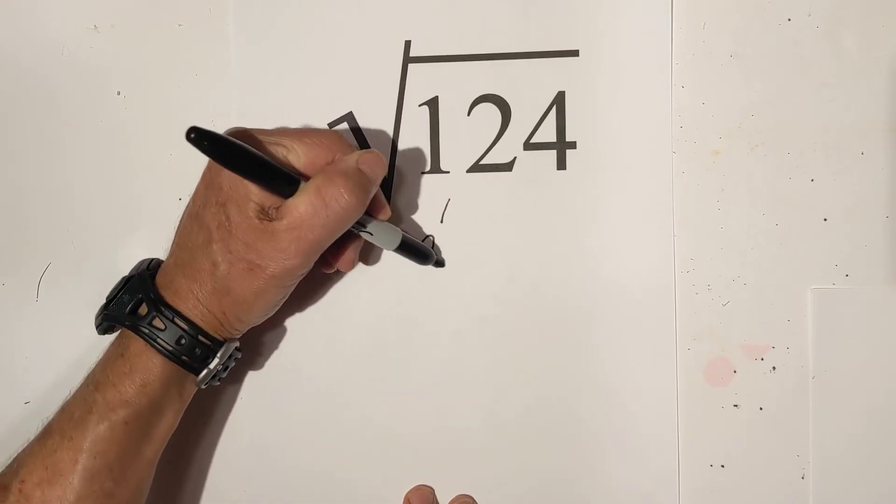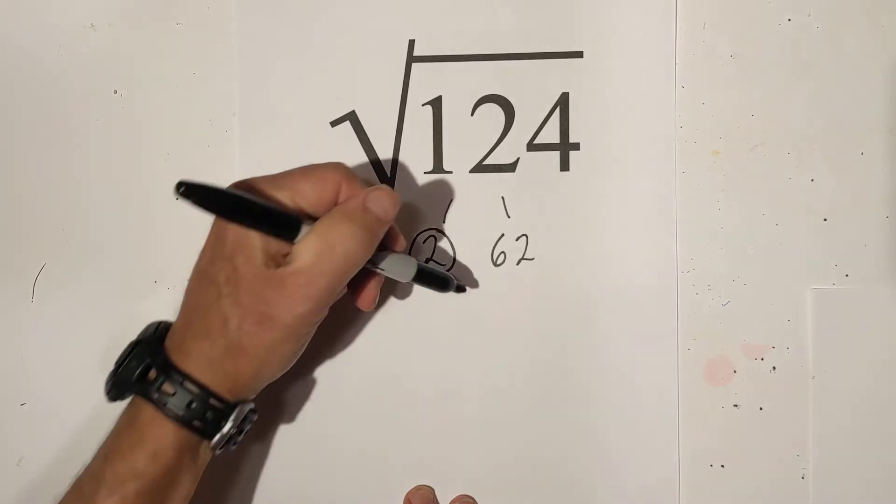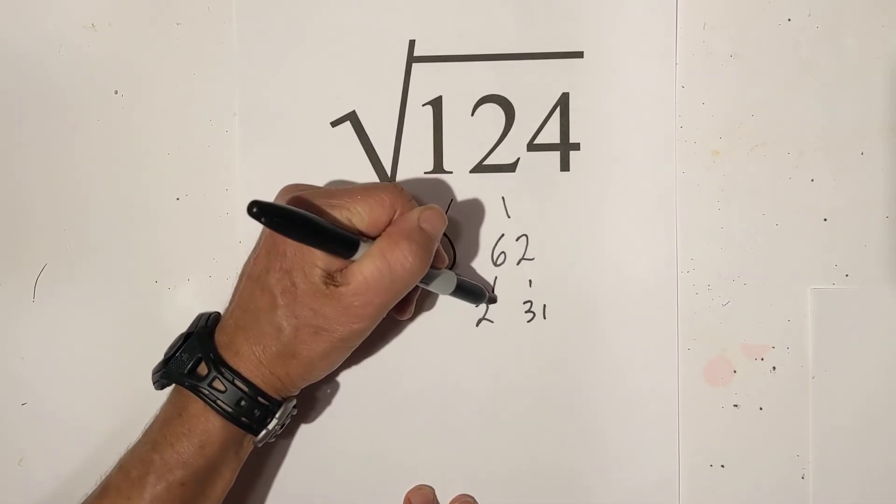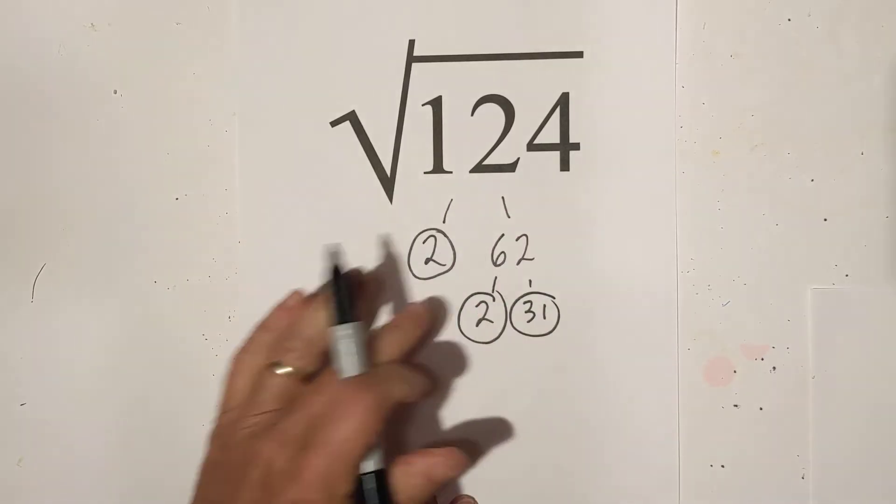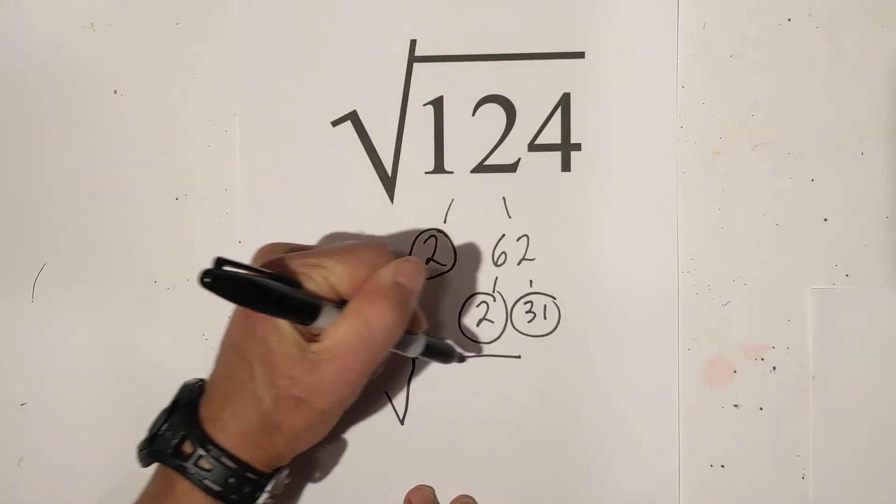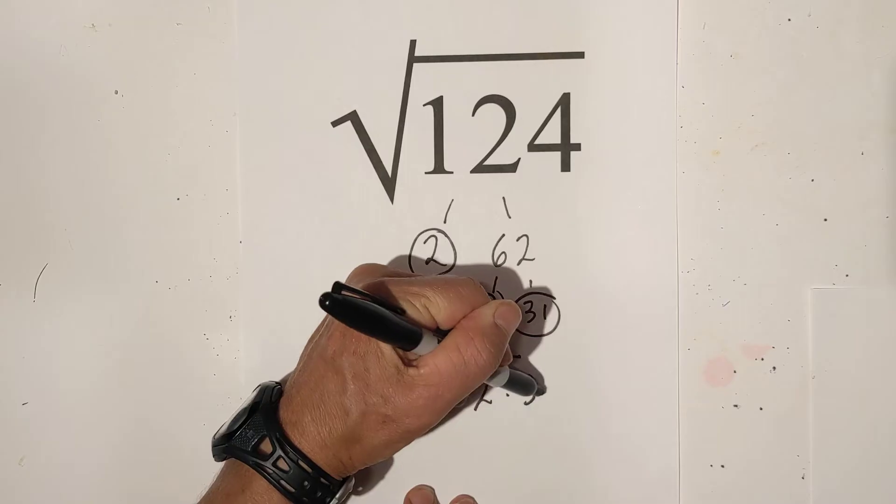So we have two times sixty two. Circle the two because you know it's prime. And then two times thirty one. And I'll circle both of these. And we've reached our goal of being down to prime numbers. Let's rewrite them under the sign. We have two times two times thirty one.